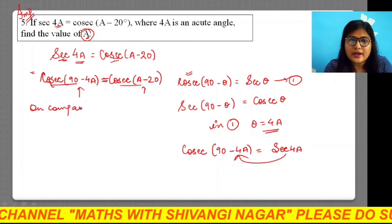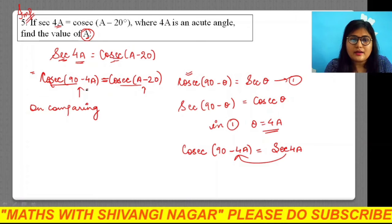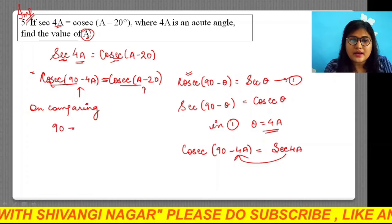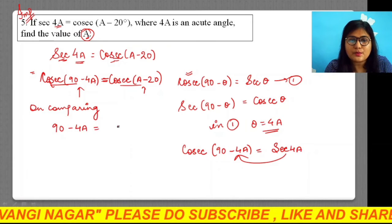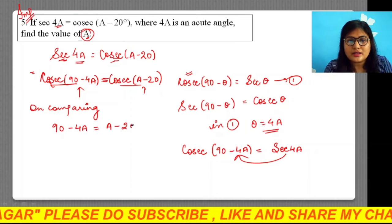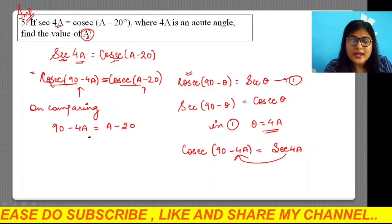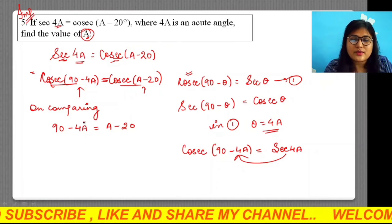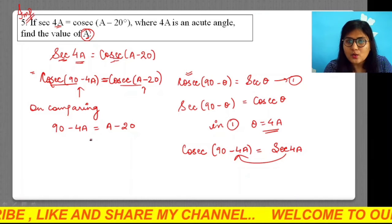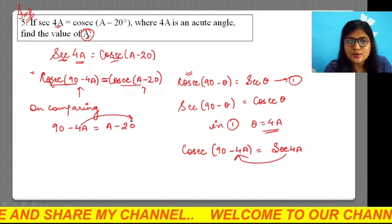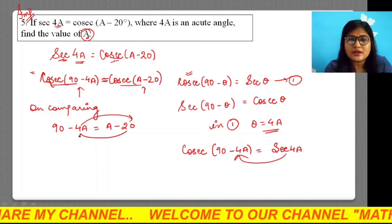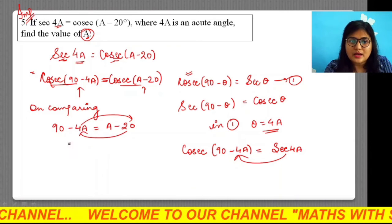Now we have to compute the value of A, so we have to transpose the like quantities on either side. I am transposing 4A on the right hand side and -20° on the left hand side. So what we will be getting here is 90° + 20° equals A + 4A.